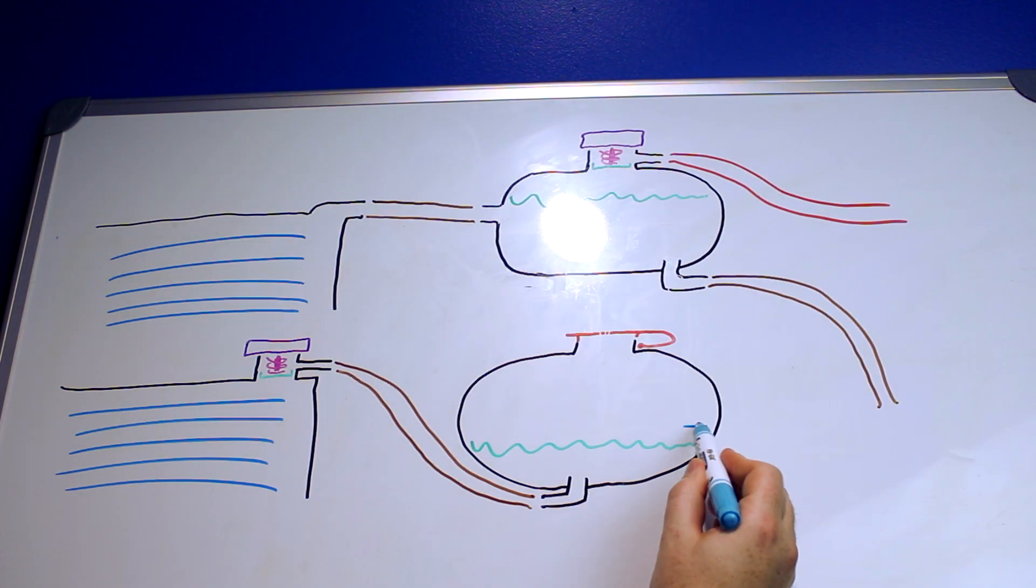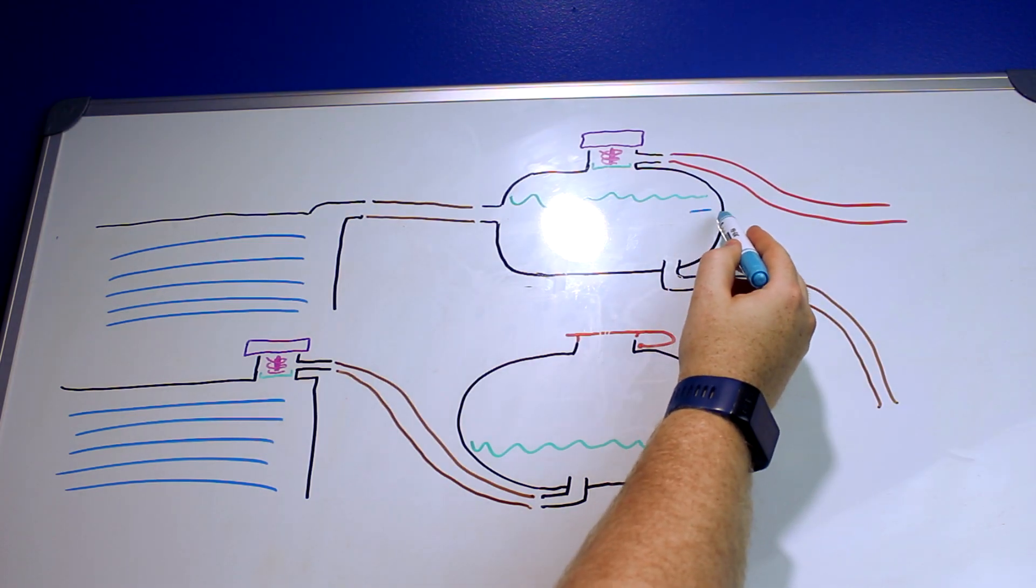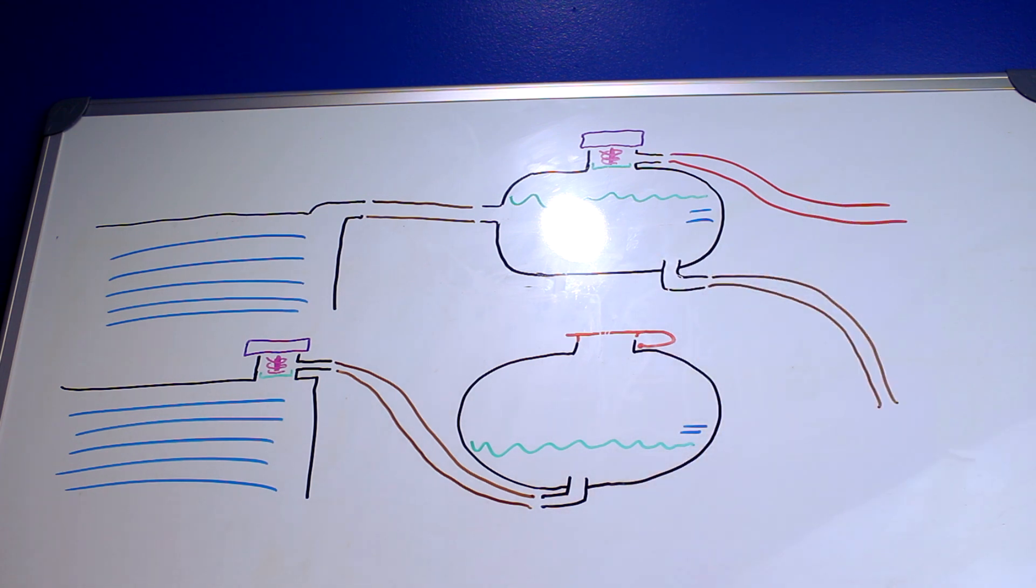Some of these may have sensors in them that let you know via the dashboard if your level is too low. And that's electronic stuff. Aside from that thermostat heater that I showed you earlier, most of the sensors that are going to be on the cooling system are monitors to make sure everything's going okay. What's the temperature? What's the level?